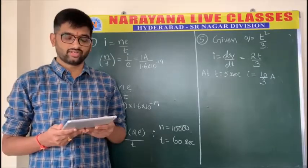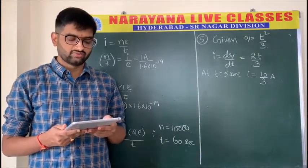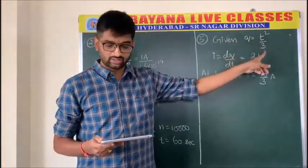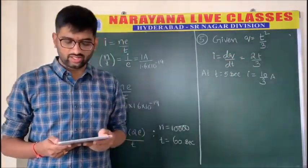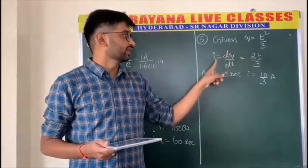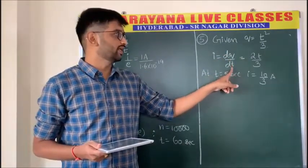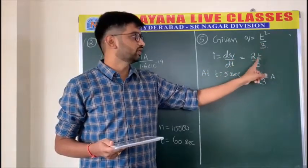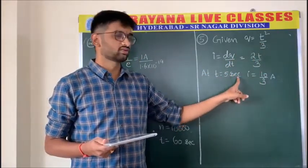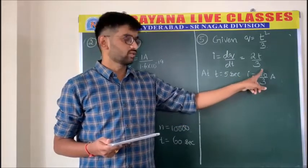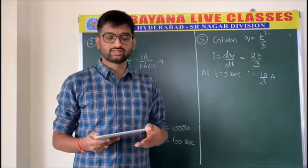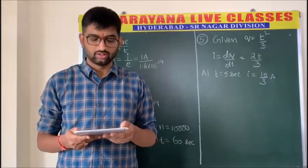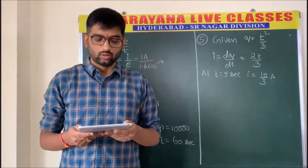Problem number five: the charge flowing through a wire is given by q = t²/3. Find the current through the wire at 5 seconds. We know I = dq/dt, so differentiating q = t²/3 we get I = 2t/3. At t = 5 seconds, I = 10/3.